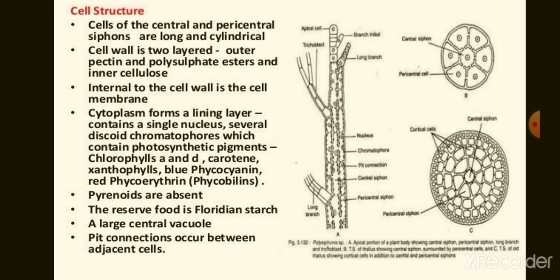Next, cell structure. The thallus is composed of a large central siphon surrounded by several pericentral siphons. Each cell is uninucleate, meaning it has a single nucleus, with many discoid chromatophores arranged peripherally in the cytoplasm. The cell wall is thick and each cell contains a large central vacuole, cell sap, pyrenoids, and Floridean starch present in the cytoplasm as reserve food.